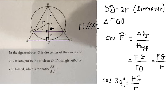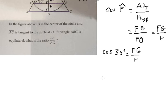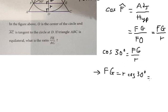We rearrange and put R to the left, so we can find FG equals R cosine 30 degrees.